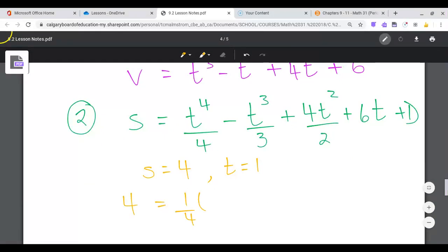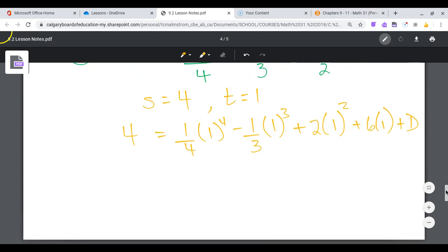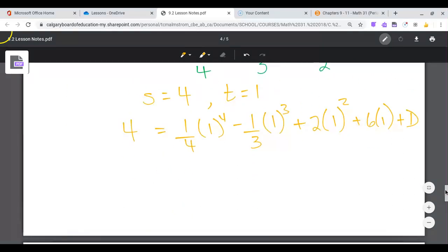So 4 is equal to 1 quarter, 1 to the power of 4 minus 1 third, 1 to the power of 3 plus 4 divided by 2 is 2 times 1 squared plus 6 times 1 plus d. And I'm going to find this value. So what do I have? I have 4 is equal to 1 quarter minus 1 third plus 2 plus 6, so plus 8 plus d.